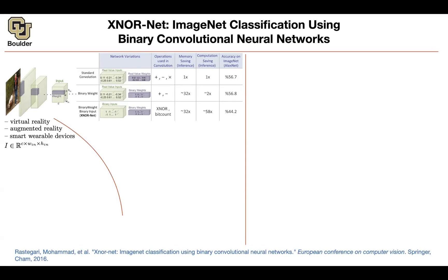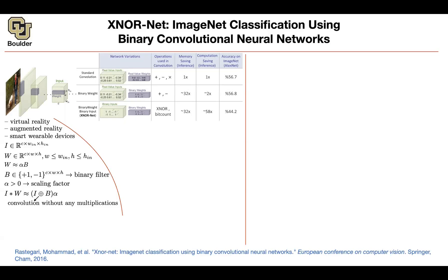Let's move on with XNOR-Net. We said we have an image with C channels, a width and a height, and a bunch of kernels or weights with kernel size W×H having the same number of channels as the input. We want to approximate W by α times B, where B is binary and α is positive, capturing the sign information in B. If we do so, the convolution operation is going to need only addition and subtraction. The memory saving went from 1× to 32× when we used binary weights, but it stayed at 32× when we binarized the input — because we are not saving the input, only the weights and biases.